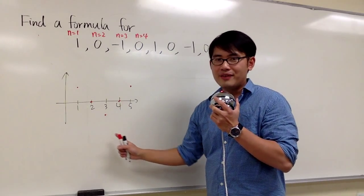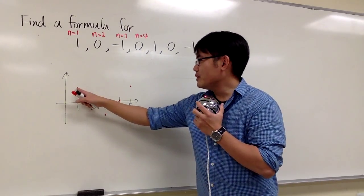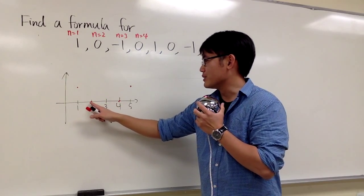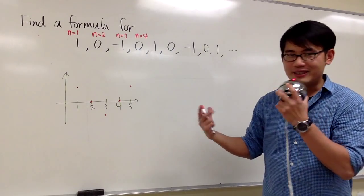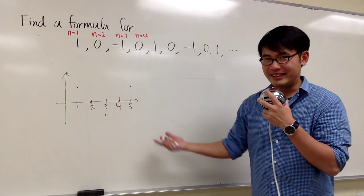Doesn't this kind of graph look familiar to you? You begin with something that's 1, and then you go 0, and then you go negative 1, and you come back up. Doesn't this look like one of the sine-cosine functions? And yes, it does, right?